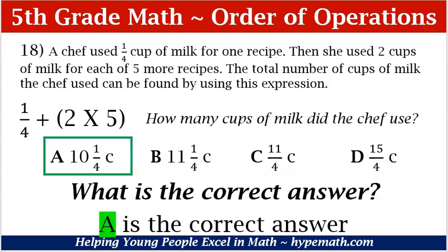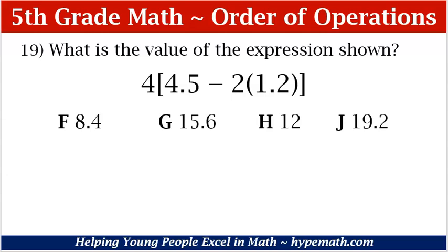That's a lot of milk — it's okay, though. Let's look at problem 19. What is the value of the expression shown? We have 4 multiplied by, in brackets, 4.5 minus 2 times 1.2. Just in case you didn't know, anytime you see a parentheses or bracket immediately next to a number with no operation in between, that means multiply. Our answer choices are F. 8.4, G. 15.6, H. 12, J. 19.2.